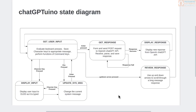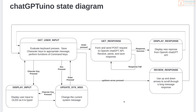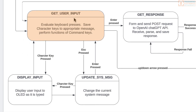Now that we've covered the basics of what a state diagram is and isn't, I want to talk specifically about the different states mapped out in this ChatGPT terminal project. Here is the ChatGPTUINO state diagram — there are six different states in this diagram. The first one is 'get user input,' and this is actually the default state that the program starts in. Every key press from the keyboard is evaluated in this state.